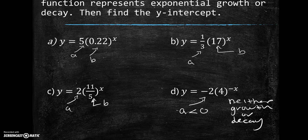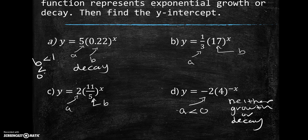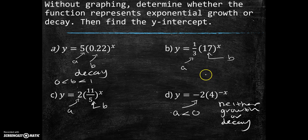I highlighted what b was. So b is the one with the x for all of them. In this first one, it's a decimal in this case between zero and one. So would that be growth or decay? Decay. Because your b is less than one and bigger than zero.